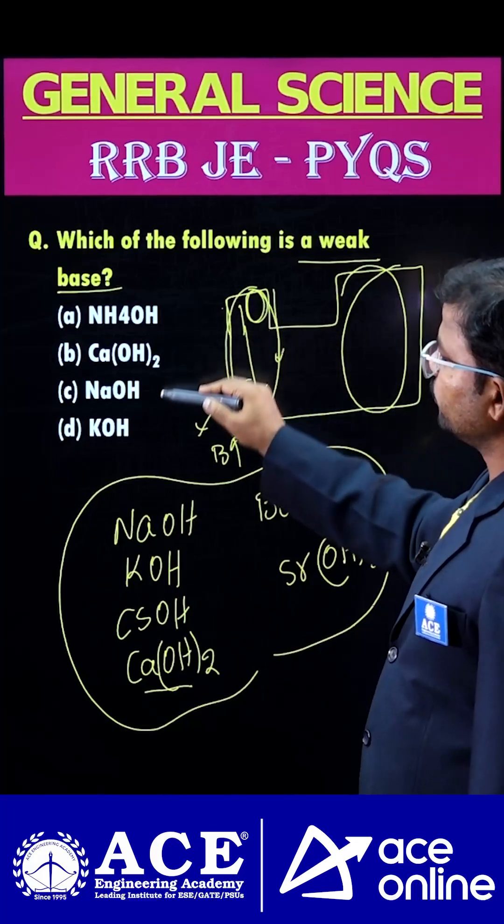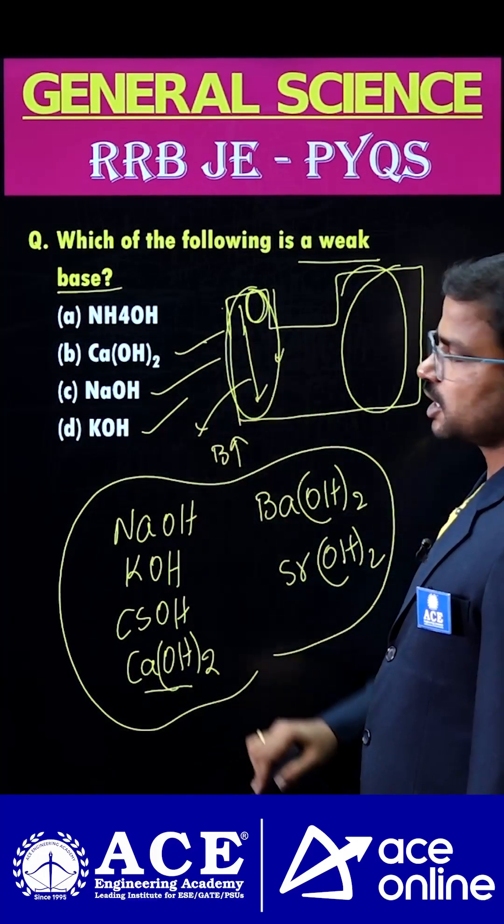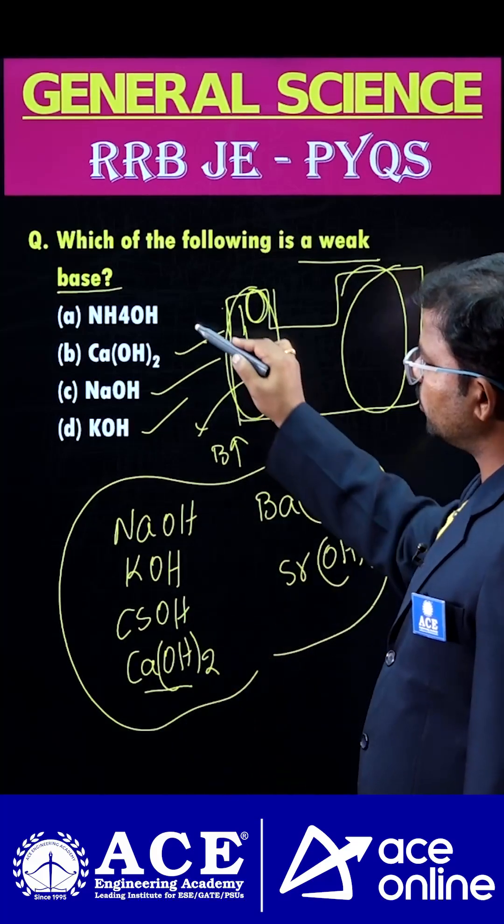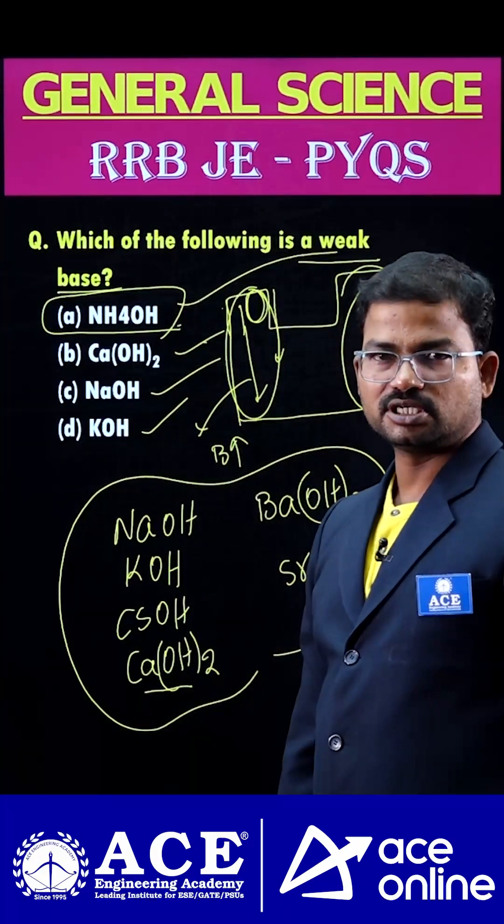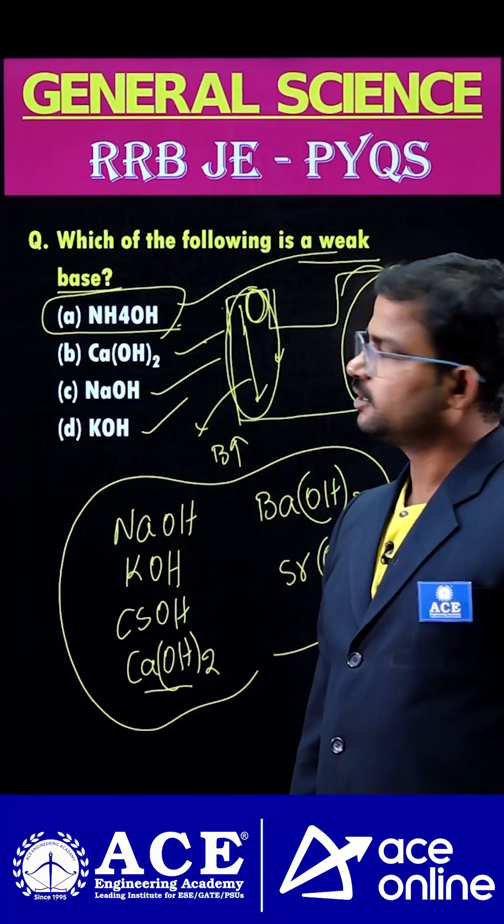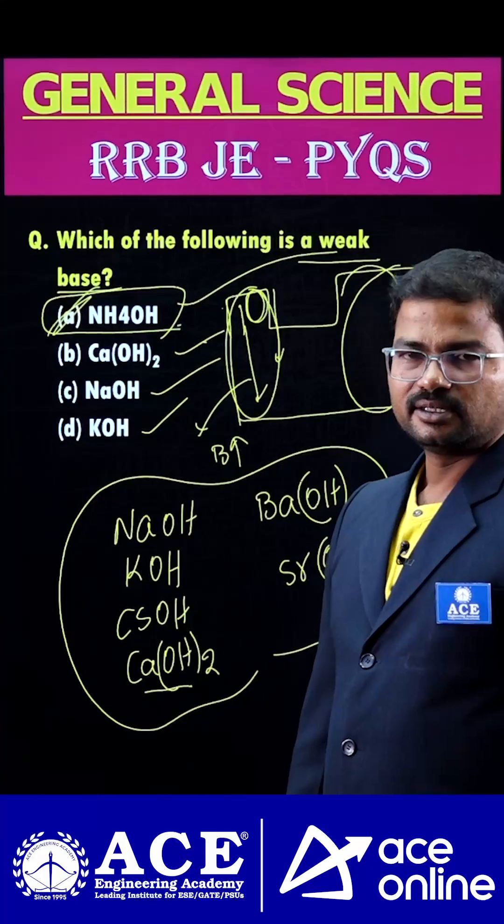So here, we have KOH, this is strong base. NaOH, that is also strong base. Next, calcium hydroxide, that is also a strong base. So here the correct one is NH4OH, ammonium hydroxide. That's why guys, we have to consider option A is the right answer.